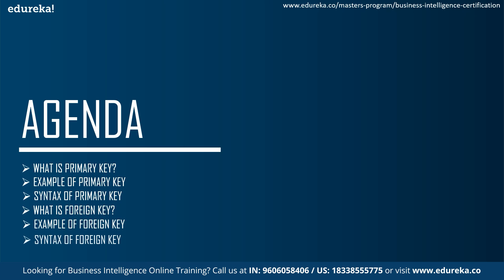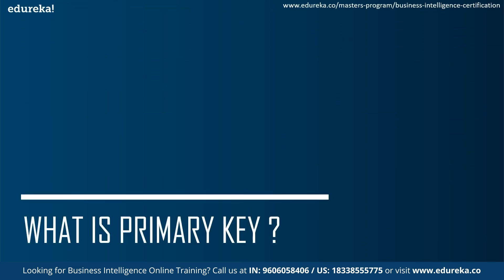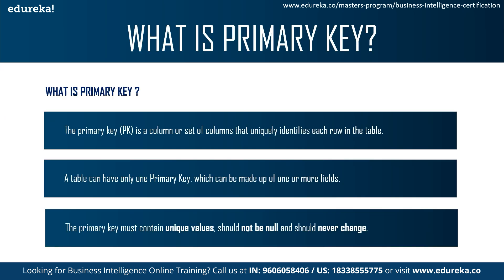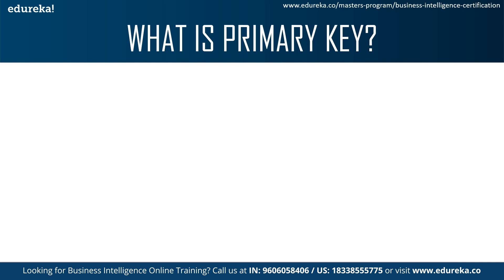We will also talk about foreign keys, examples of foreign keys, and the syntax of foreign keys. To begin with, what is a primary key? A primary key is basically a restriction — it is a column or a set of columns that uniquely defines each row in a table. When we set a column as a primary key, it will always have unique data with no duplicates and no null values.